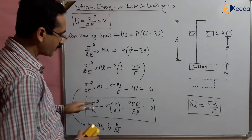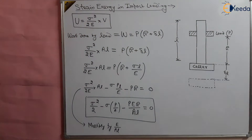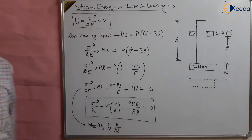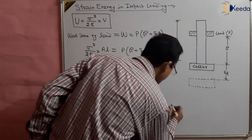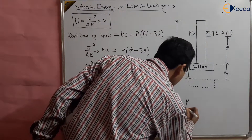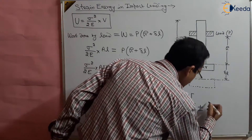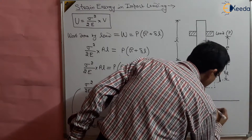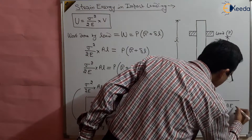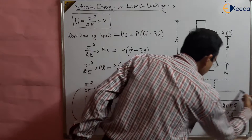We have applied the strain energy concept to find the stress. This quadratic equation can be solved using the formula: x equals minus b plus or minus root of (b squared minus 4ac) all over 2a. Solving it, the stress developed due to impact loading is: sigma equals P over A times (1 plus or minus root of (1 plus 2AEh over PL)). This is the stress developed due to impact loading.